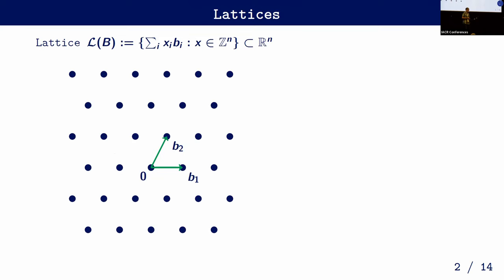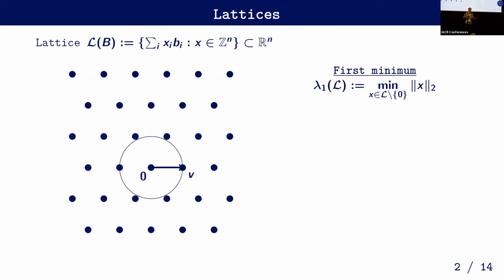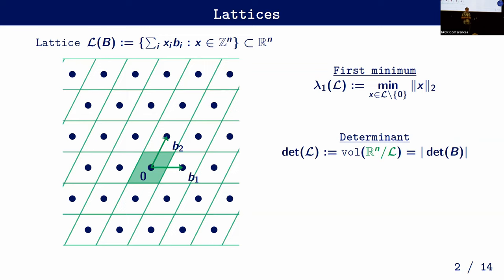Let's get to the definitions. What is a lattice? Given any basis, you can view a lattice as all the integer combinations of these basis elements. Regarding geometric properties: the most famous is the first minimum of a lattice — the minimum length of any non-zero lattice vector, or equivalently the minimum distance between any two distinct lattice points. Secondly, we have the determinant of a lattice, which is the volume of any fundamental domain, and this is always the same.